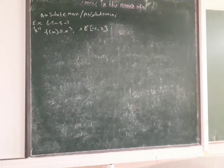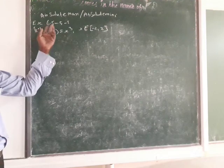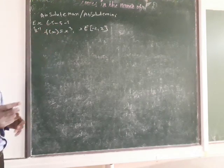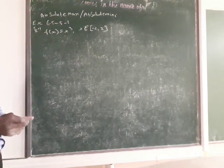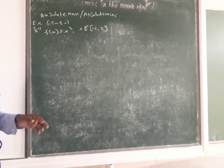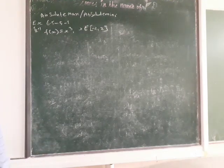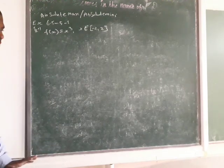Now we are going to learn about absolute maximum and absolute minimum. They give f of x equal to x cube, and they ask to find the absolute maximum and absolute minimum.